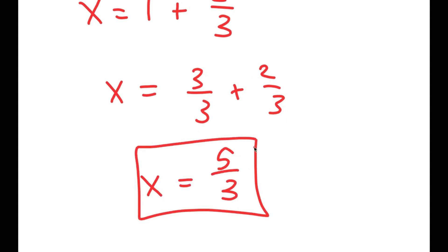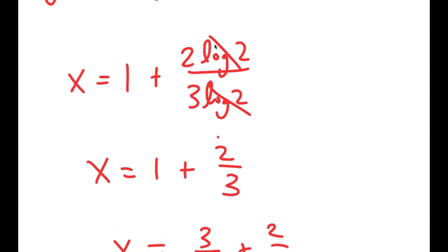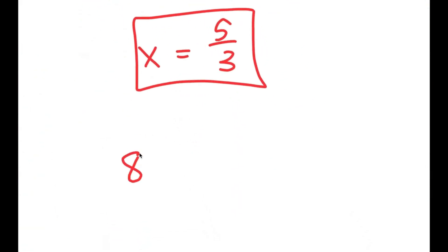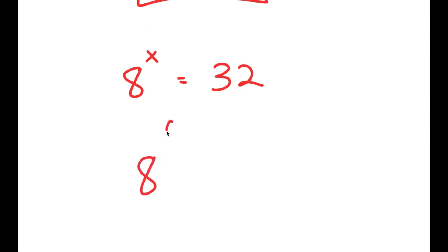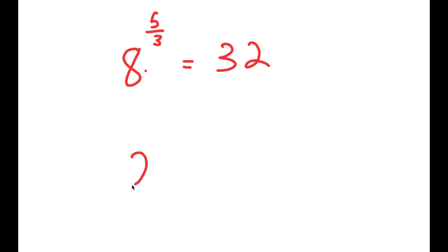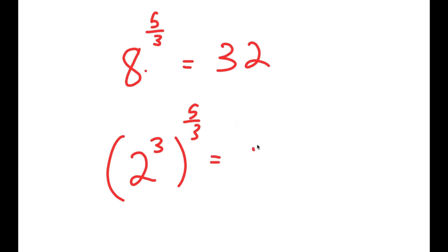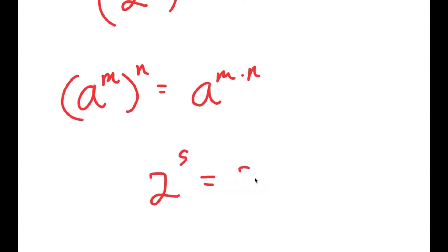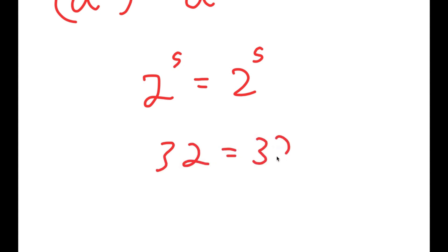So x is 5 over 3. Now, how do we know that this is the right answer? Going back, we have 8 to the power of x equals 32, and we're plugging in 5 over 3. So we get 8 to the power of 5 over 3 is equal to 32. Since 8 is the same thing as 2 to the power of 3, I get 2 to the power of 3 to the power of 5 over 3, which equals 2 to the power of 5. Using the rule a to the power of m to the power of n equals a to the power of m times n, the two 3s cancel out, and I get 2 to the power of 5 equals 2 to the power of 5, or 32 equals 32. This is right.